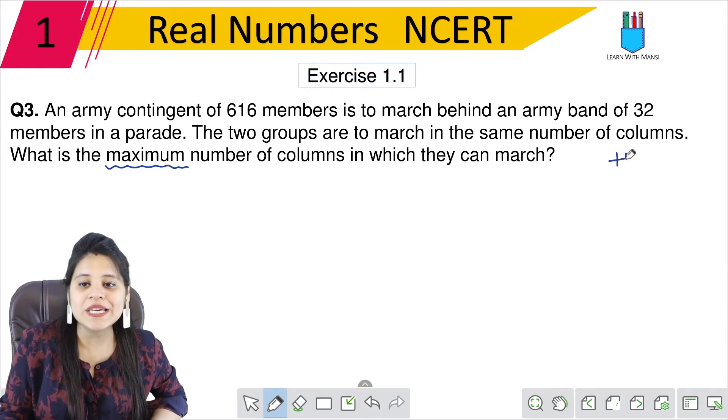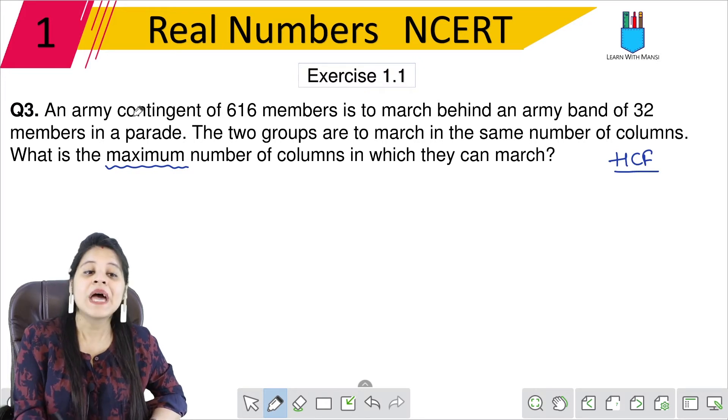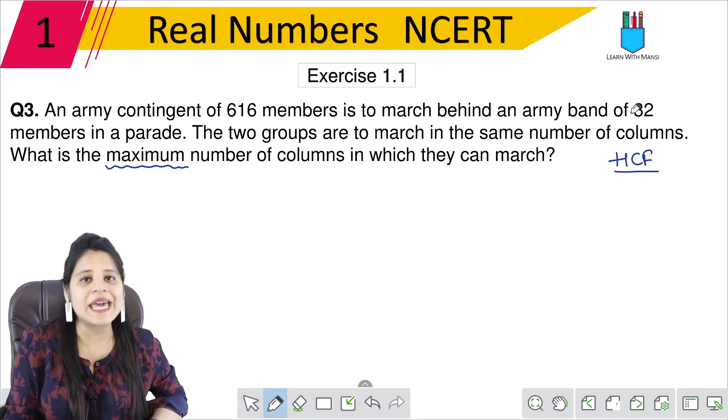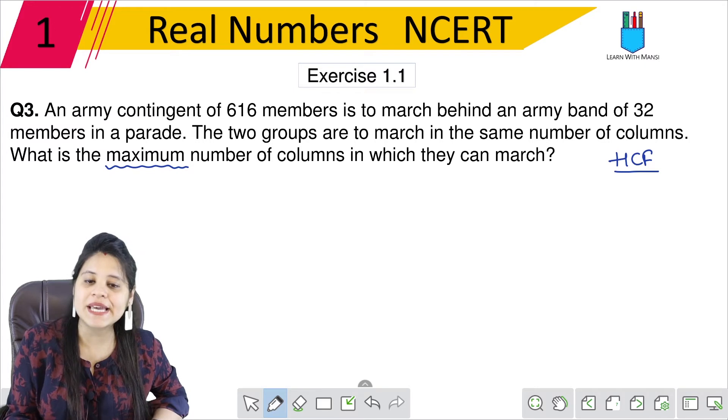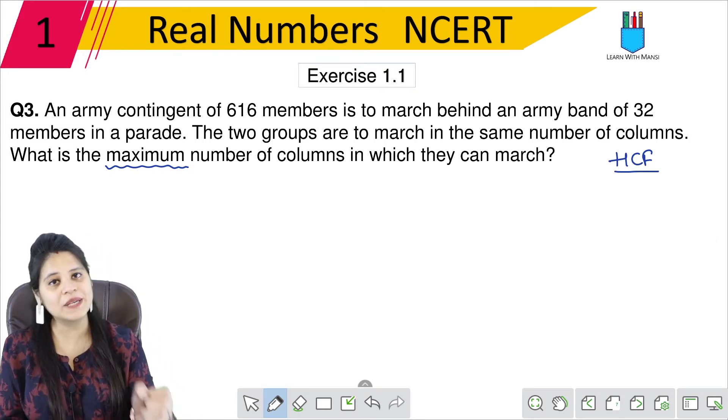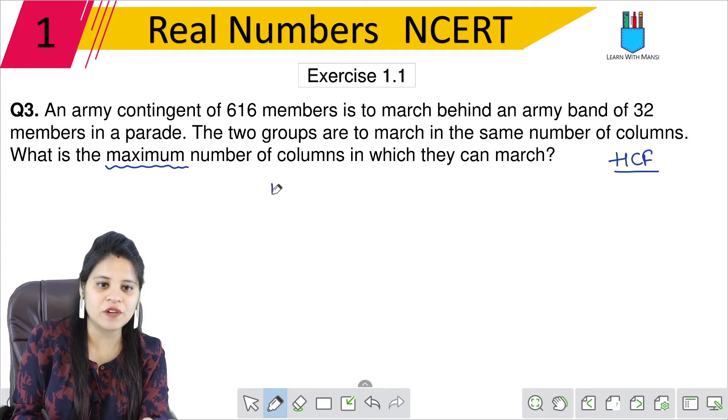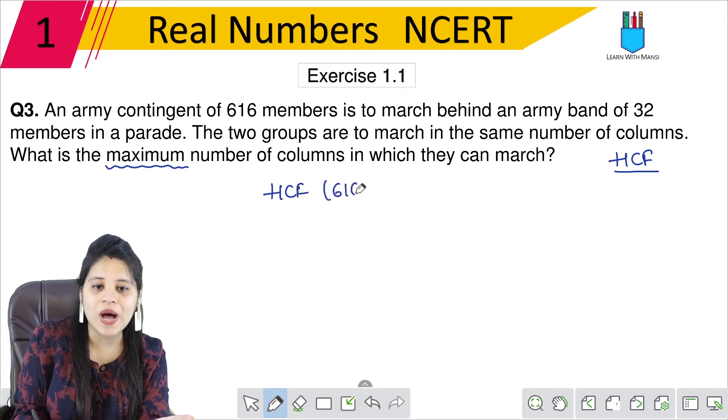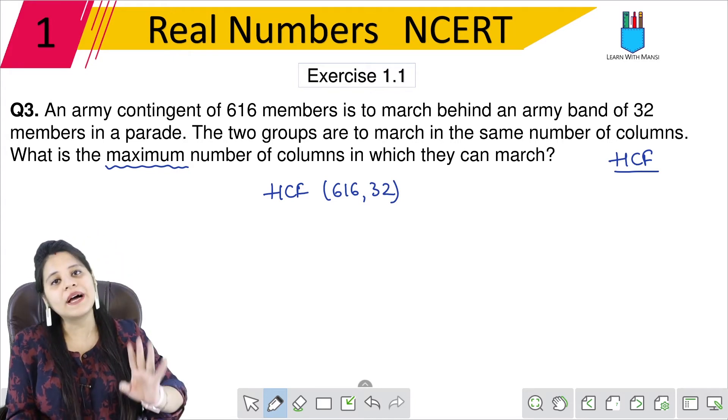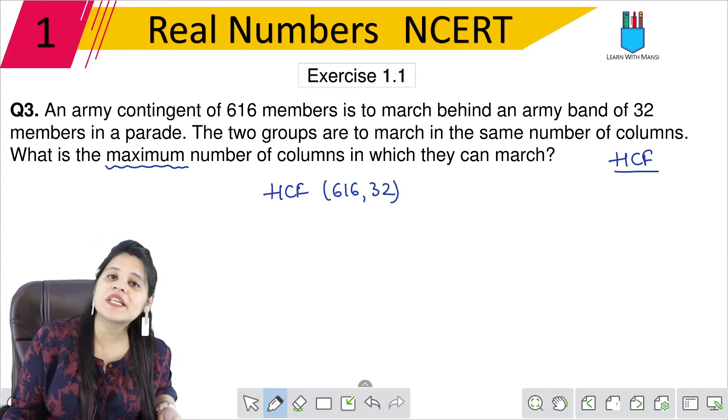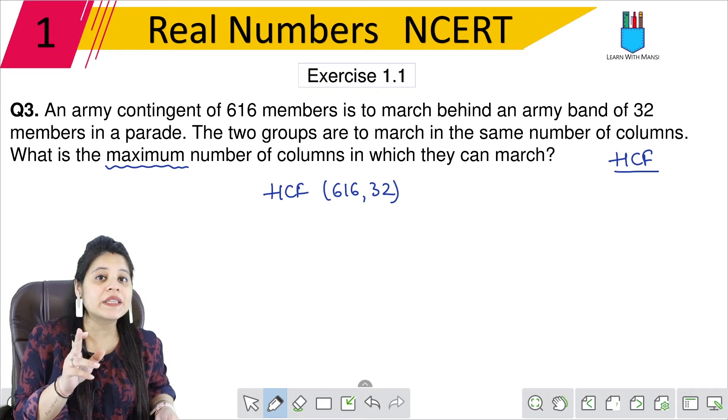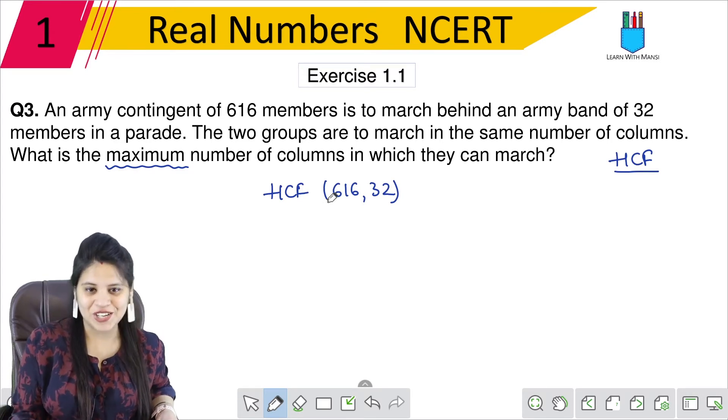So in this case we are going to find the HCF. If we find the HCF, we will find the number of columns in which they have to march. Therefore, we have to find the HCF of 616 and 32. We will find this HCF by which method? Euclid's division algorithm.